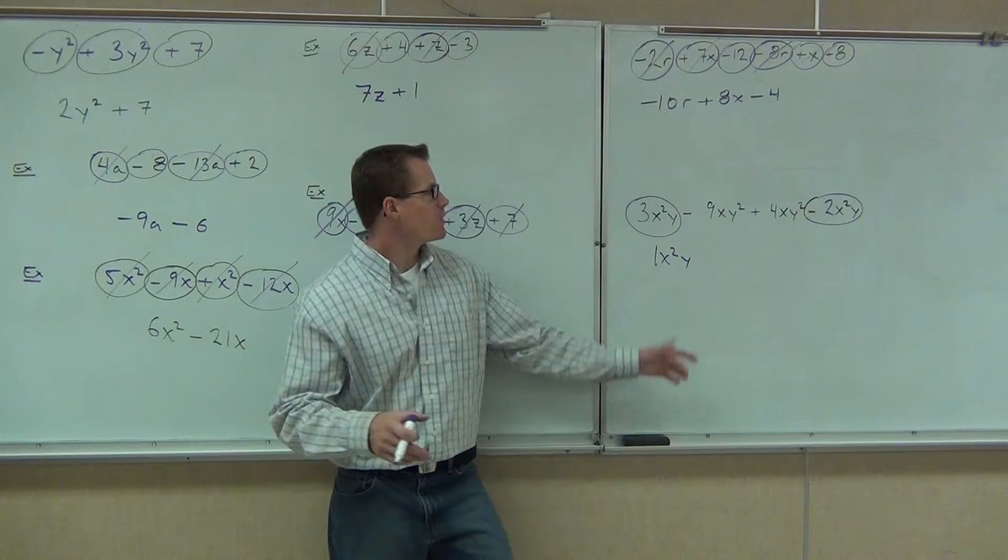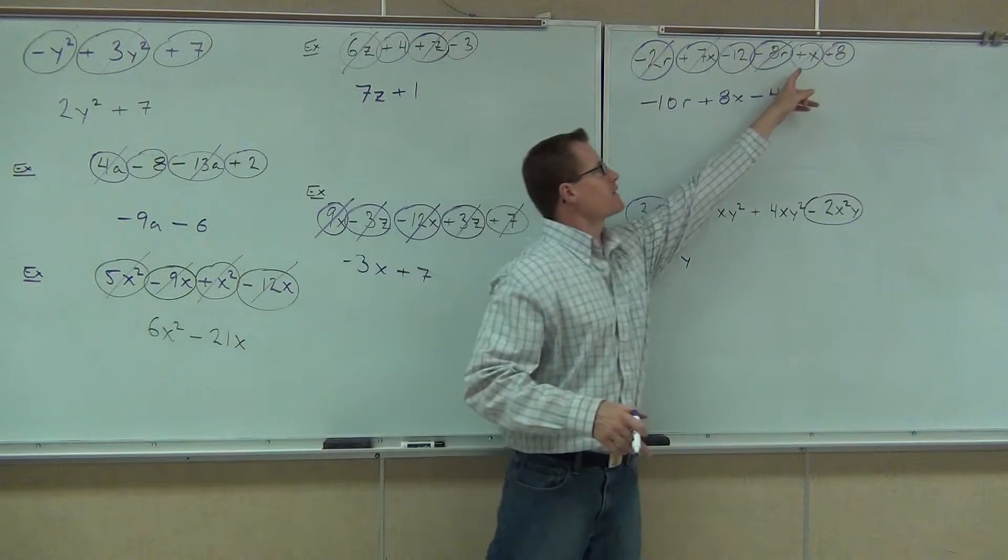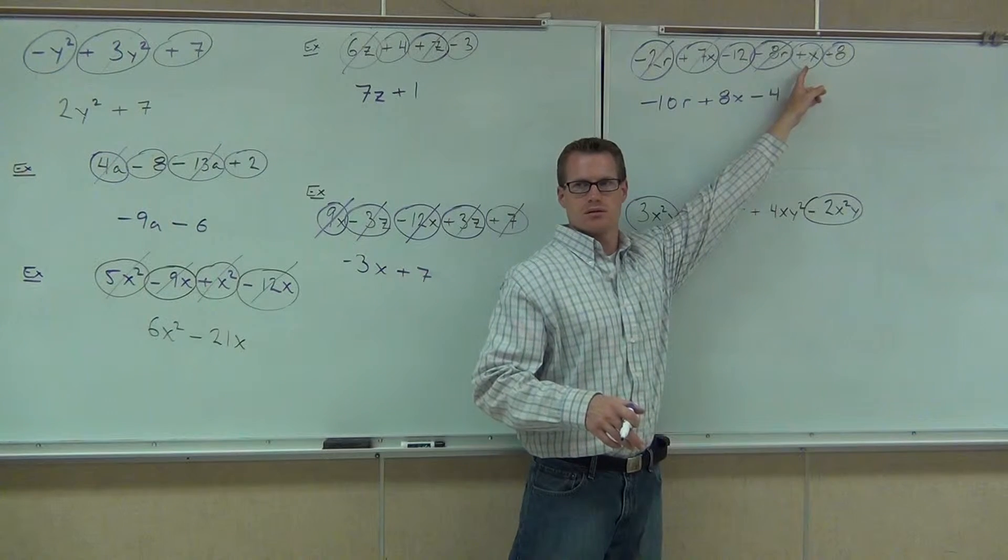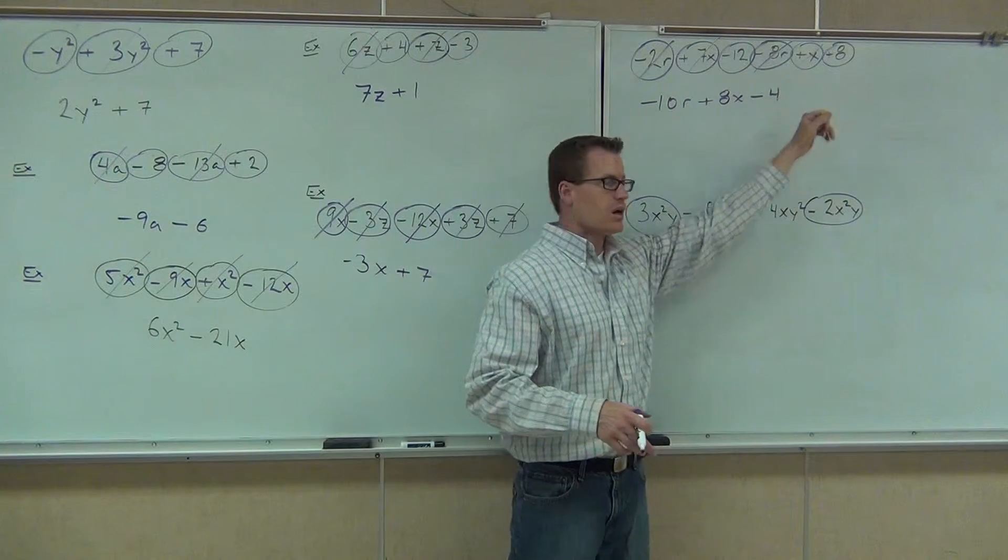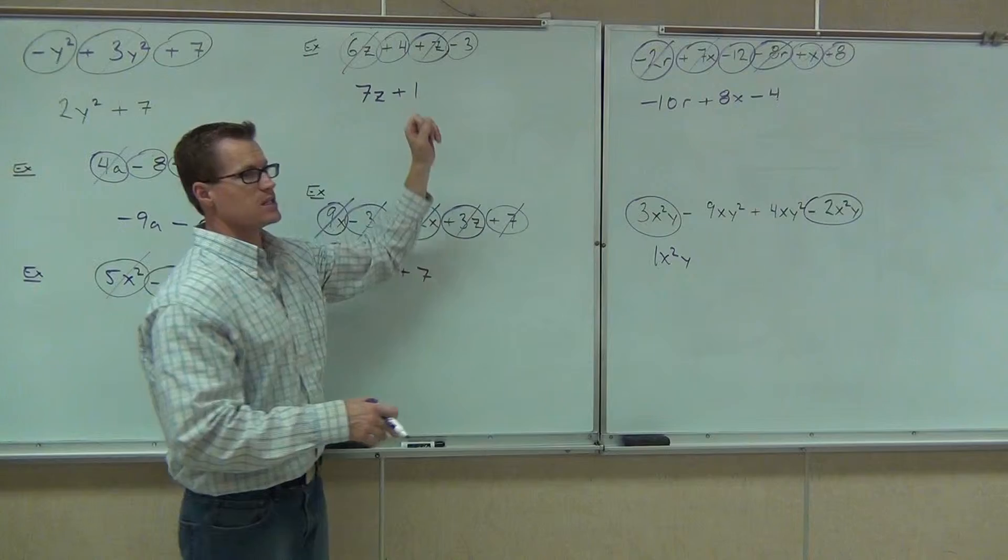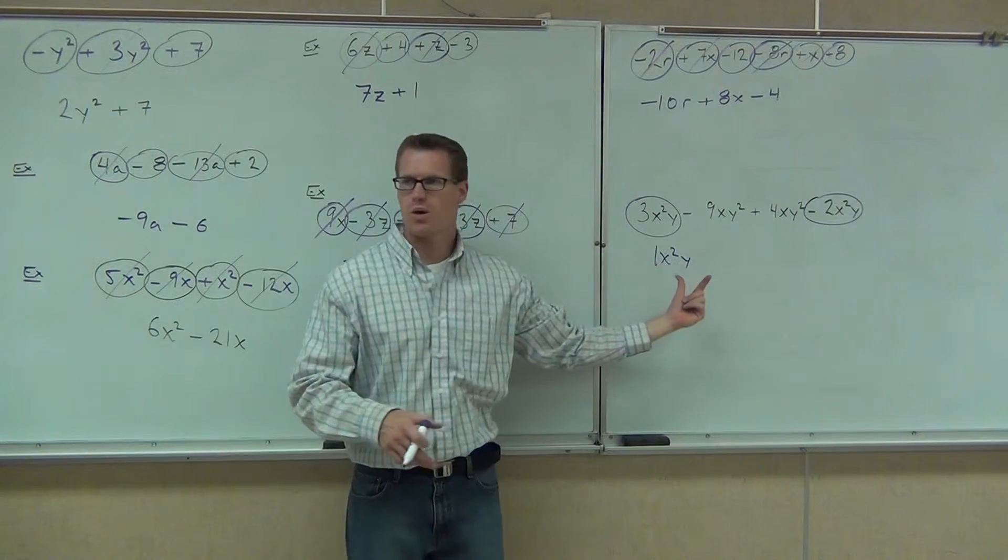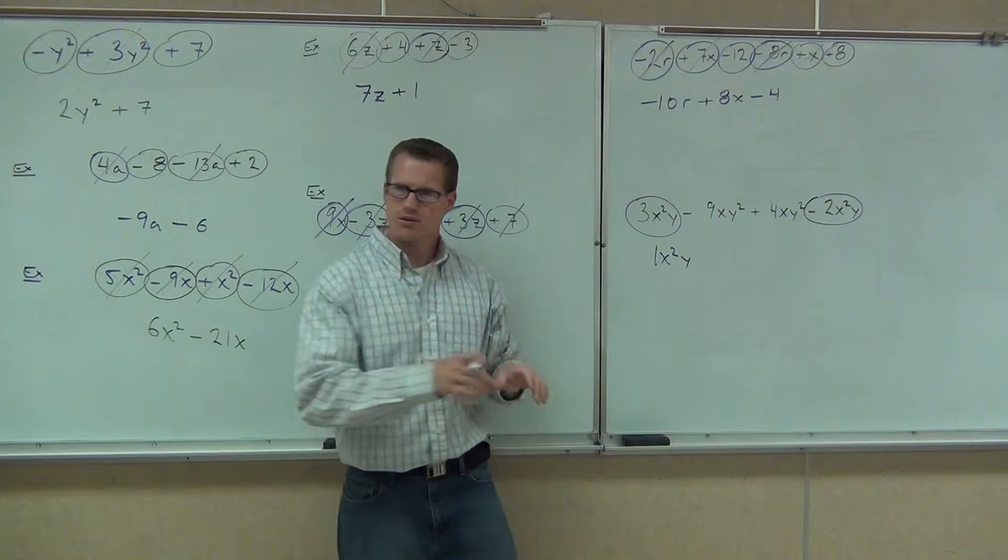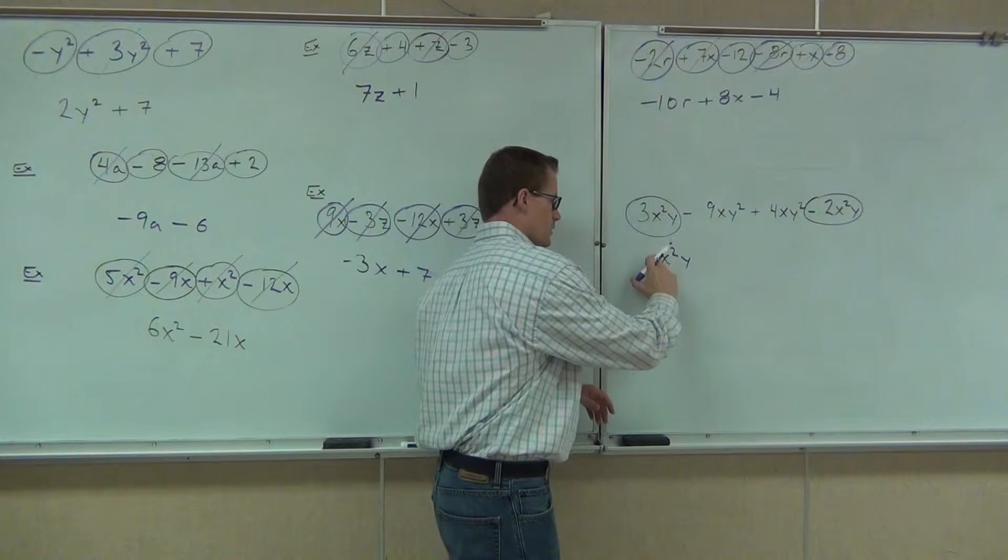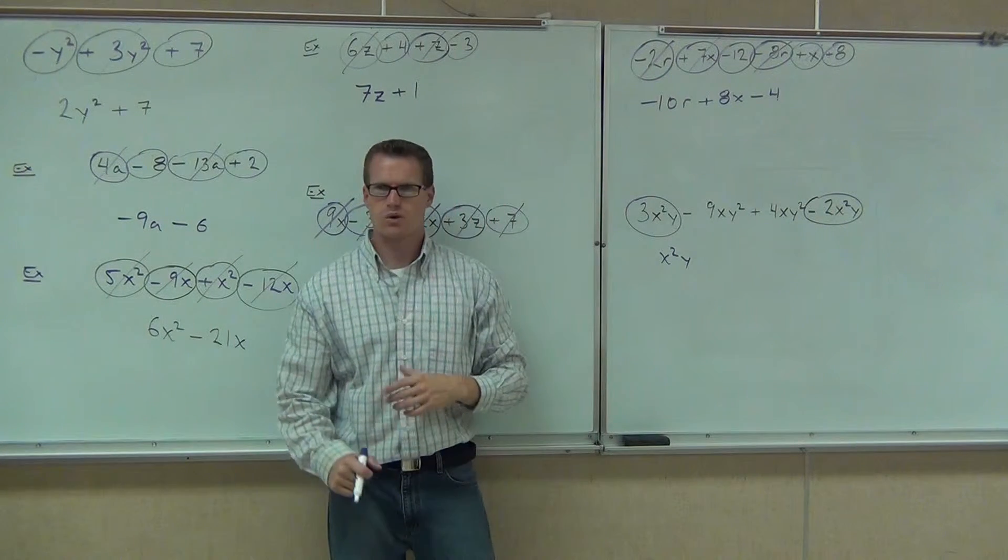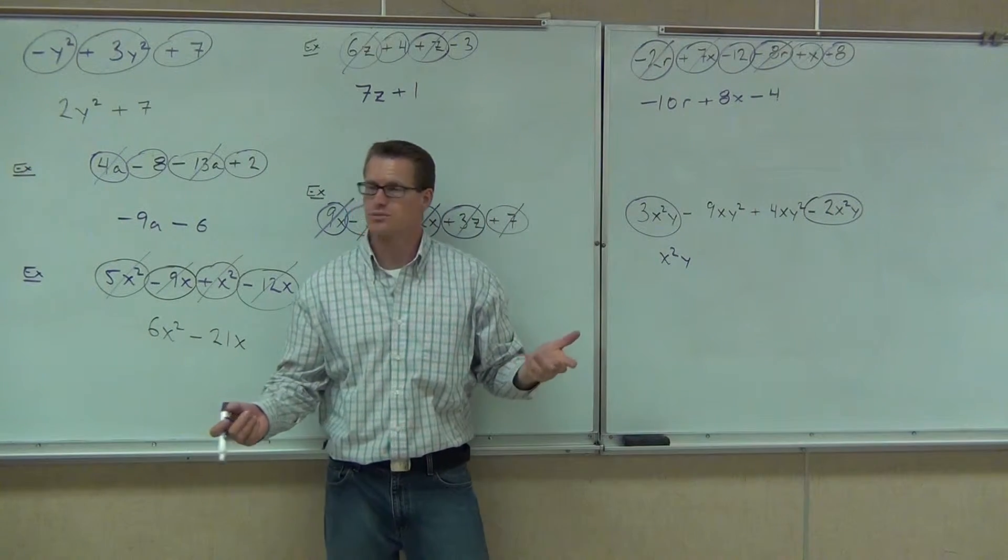3X²Y. When I combine those, do you have to write 1X²Y? No. It's X²Y. Should you write 1X²Y? No. You can. Is it wrong? No. It's technically not wrong. Are you ever going to see it in a math book? No. When we mean one of something, we write it like that. That means one x, right? Yes. And this means one z.